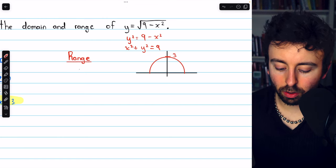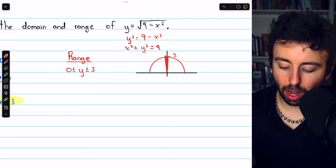And so the range, the possible y values, is everything less than or equal to 3 and greater than or equal to 0. All of these y values here.